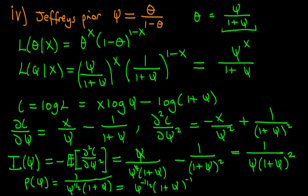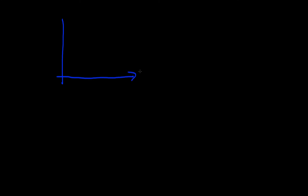The Jeffrey's prior is proportional to this — this is just the functional dependence. We can plot what Jeffrey's prior looks like in terms of psi. We obtain a result which is very much not a uniform prior: it slopes downwards, it's a power curve asymptoting towards the horizontal axis.